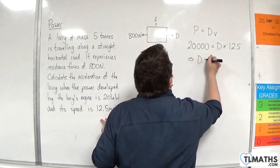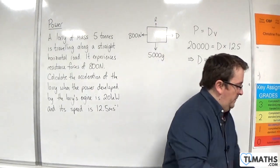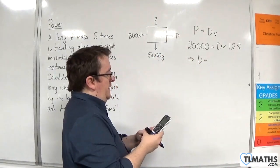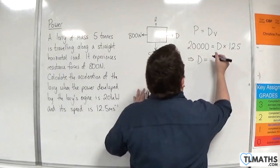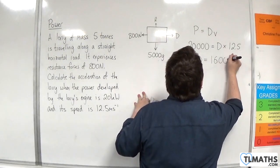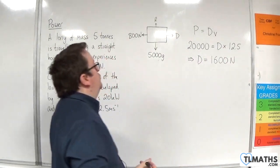So we can easily calculate d. So 20,000 divided by 12.5 is 1,600. So that's 1,600 newtons.